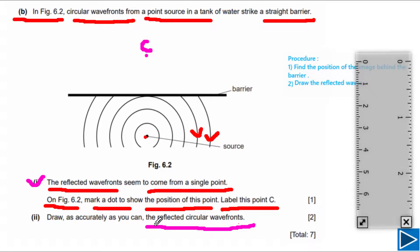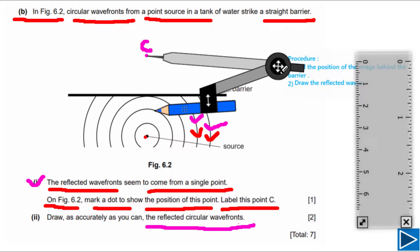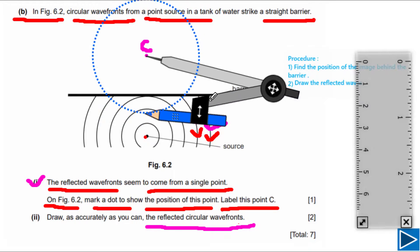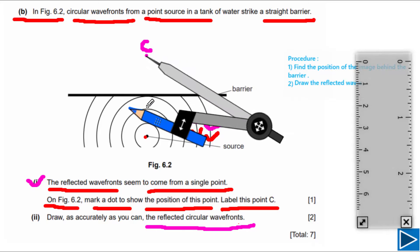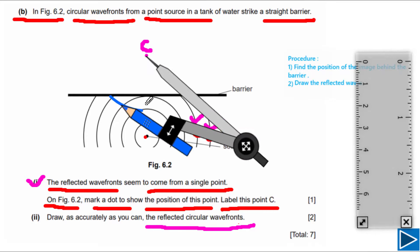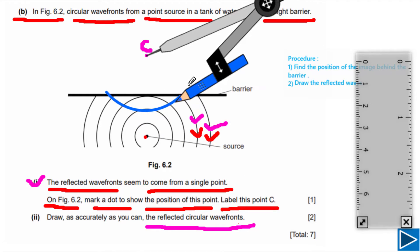For the second part, we need to draw reflected circular wave fronts. Only wave fronts 4 and 5 are reflected, so we draw two reflected wave fronts. Place your compass at point C. Open the compass and draw the first reflected wave front like this.